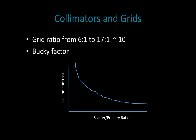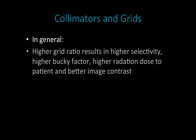For example, a structure with a thickness of about 12 centimeters will probably need a grid. Usual grid ratios range from 6:1 to 17:1, with 10:1 being typical for radiography and fluoroscopy. In summary, a higher grid ratio results in higher selectivity — fewer x-rays pass through the grid — which results in a higher bucky factor, a higher radiation dose to the patient, and the benefit of better image contrast.